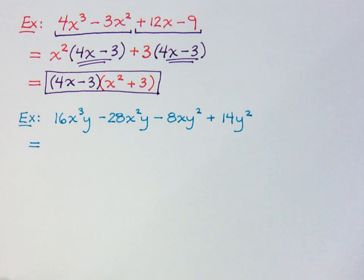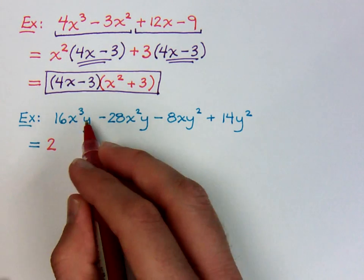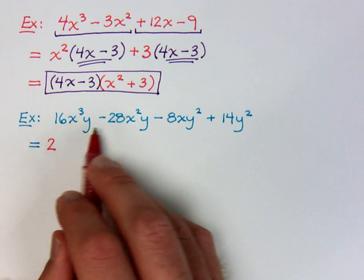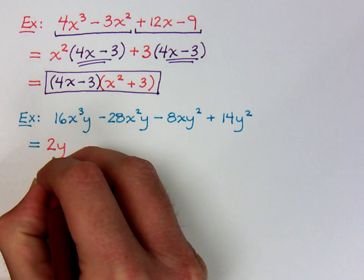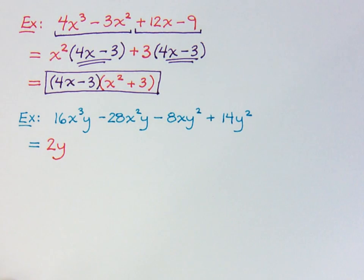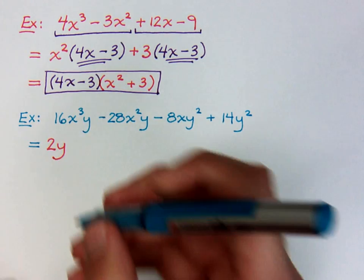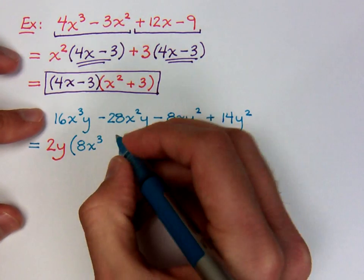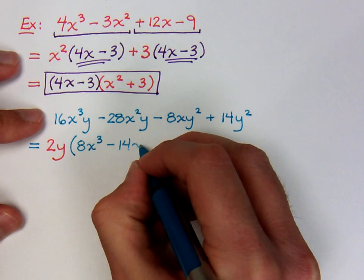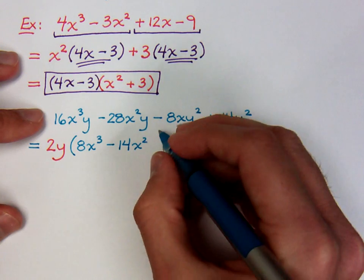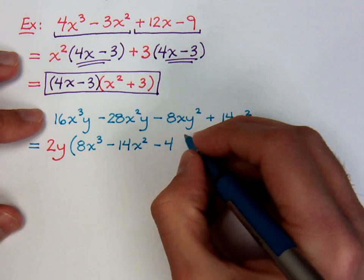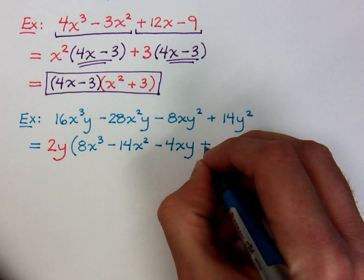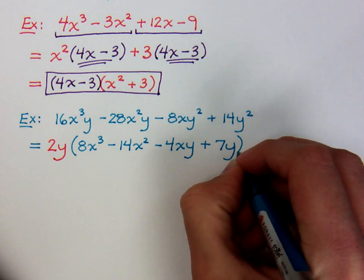I've got a common factor of 2, but they don't all contain x — this guy's messing up the fun. But they do all contain y. So the amount of y I can factor out of all of these is just 1y, because that's the least amount that I have. When I take out the 2y, I have 8x to the third. 28 divided by 2 is 14, so minus 14x squared. I already took the y out. Negative 8 divided by 2 is negative 4, I have my x, and I still have 1y left over. And 14 divided by 2 is 7; I had y squared, so I only have 1y left.